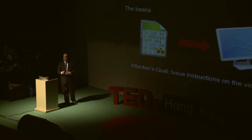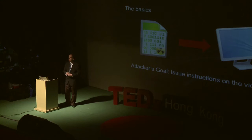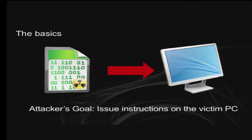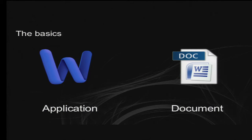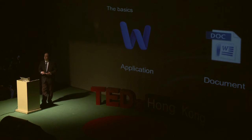But before we do that, we need to learn some basics — just a few slides on how this attack will be initiated. The goal of these attacks, ultimately, is to steal some sort of digital asset. To do that, we need to issue instructions onto a computer. We have applications on our machines and we have data on our machines. Applications can issue instructions to our computer and tell it what to do, whereas data is really just data to be manipulated by those applications.